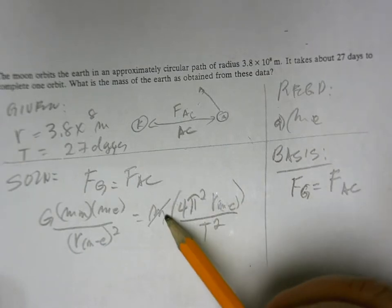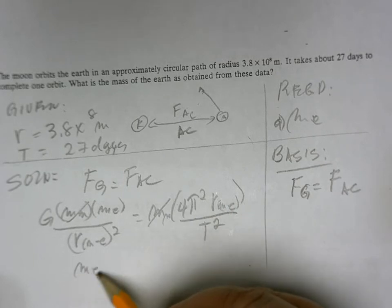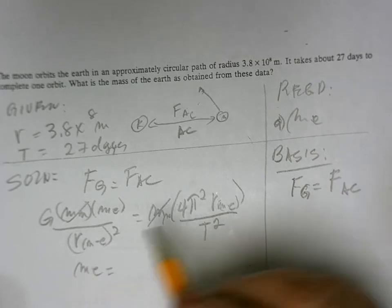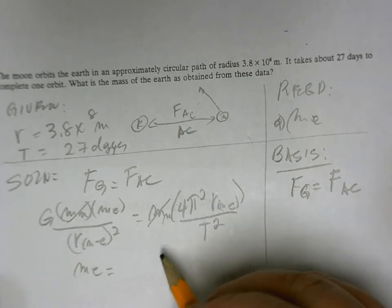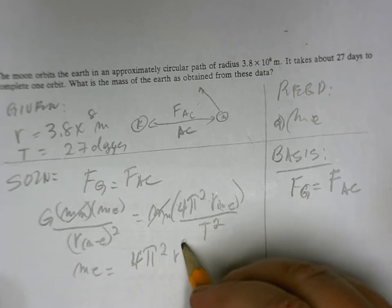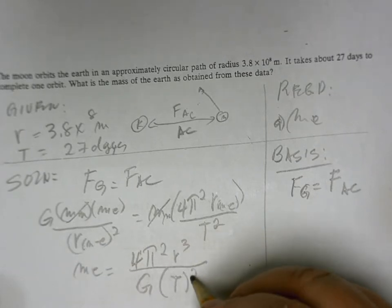all over the period squared. This cancels, the mass of the Moon cancels with that. The mass of the Earth is therefore equal to 4π squared R cubed divided by G times T squared.